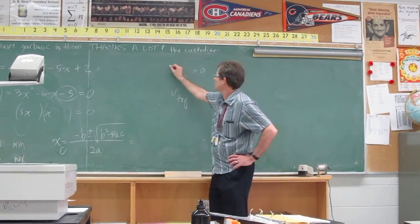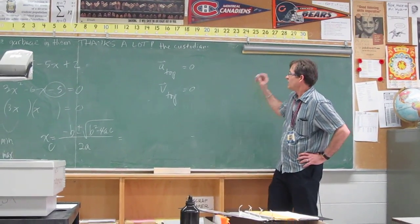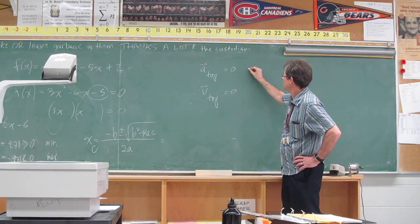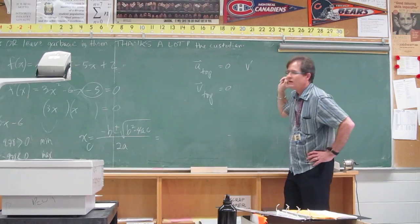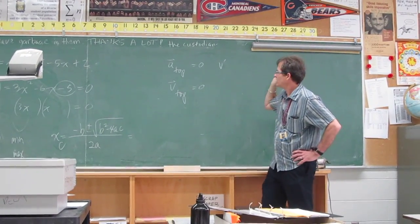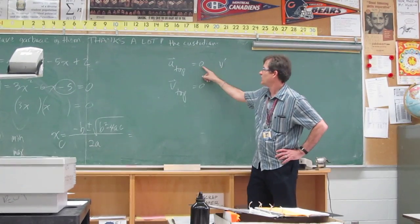Now these are vectors so if you want to put an arrow on there you can, but it's one dimensional so we won't worry too much about that. The acceleration is the rate of change of the velocity. That is v prime. So if your velocity is zero at the top and it's not changing, the rate of change is zero.